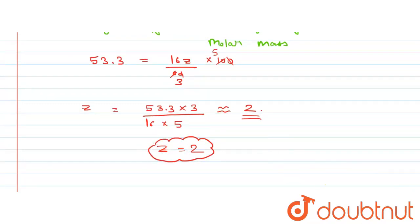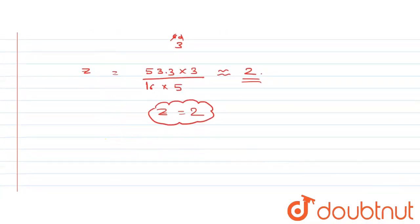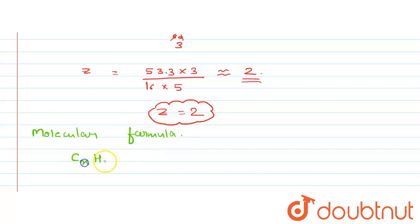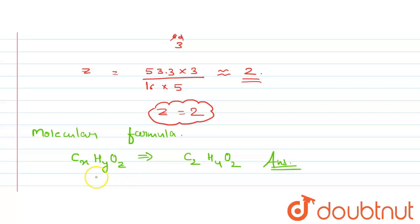Now the molecular formula CxHyOz is determined. With x=2, y=4, z=2, the molecular formula becomes C₂H₄O₂. This is the required answer. By this we have completed the question, and I hope I was able to help you.